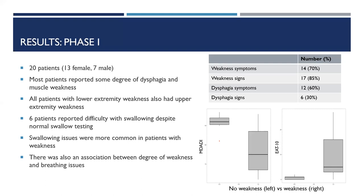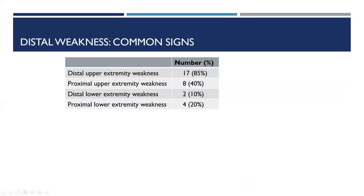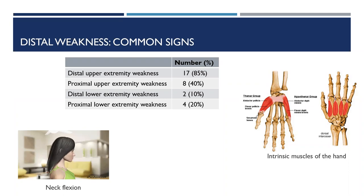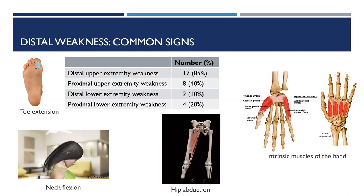We also found that swallowing issues were more common in patients with weakness — the graph on the bottom right shows MDADI and EAT-10 scores for patients who did and did not have weakness. We found a correlation between degree of weakness and breathing issues, implying a direct association between progression of myopathy, breathing issues, and swallowing issues. All 17 patients with weakness had distal upper extremity weakness, most commonly in the intrinsic muscles of the hand. Eight patients had proximal upper extremity weakness, most commonly in neck flexion. Only two had distal lower extremity weakness, primarily in toe extension, and four had proximal lower extremity weakness primarily in hip abduction.